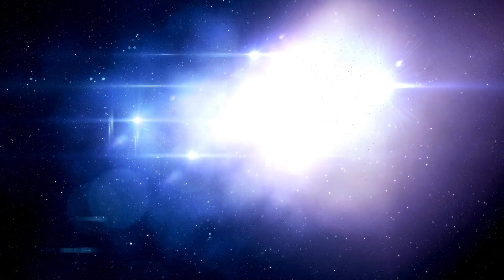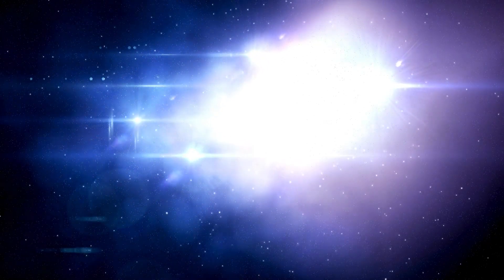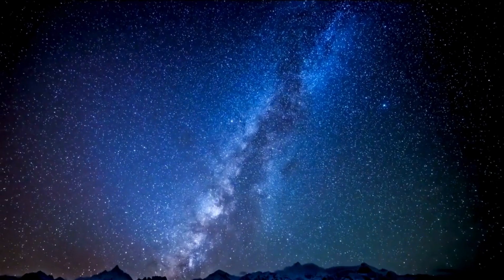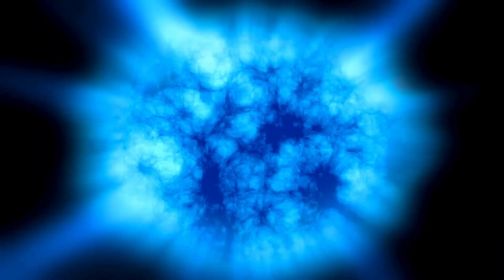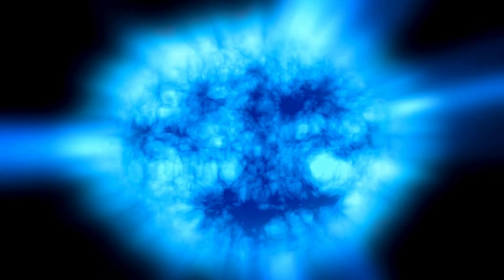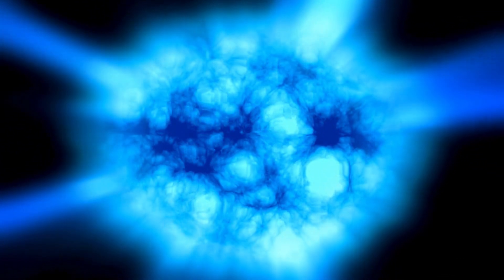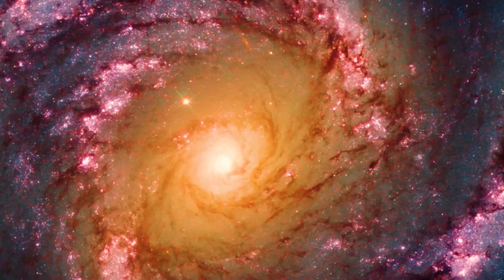This exoplanet, the closest to Earth, lies in the habitable zone of our nearest star, Proxima Centauri, about 4.25 light-years away. Proxima b was believed to be locked in synchronous rotation similar to the Moon with Earth, with one side always facing its star.